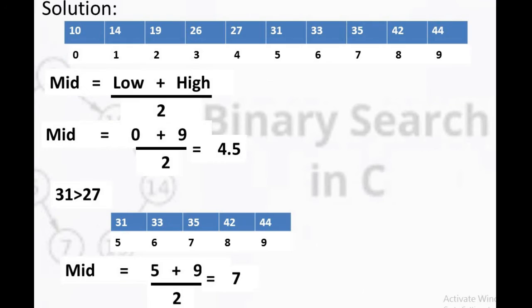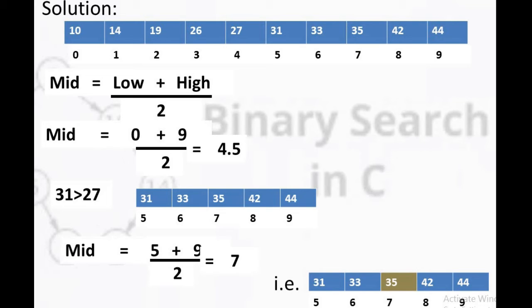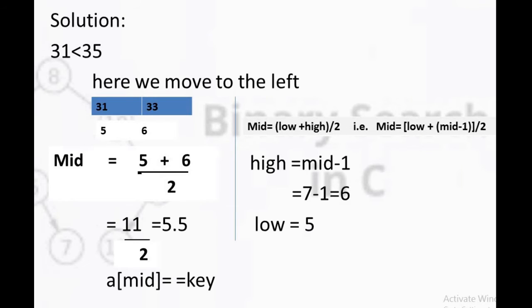In the next step, again we use the same formula. Here lowest element is 5 and highest element is 9. The 7th index value is 35. So again we compare our value, 35 with 31. Here 35 is greater than 31.